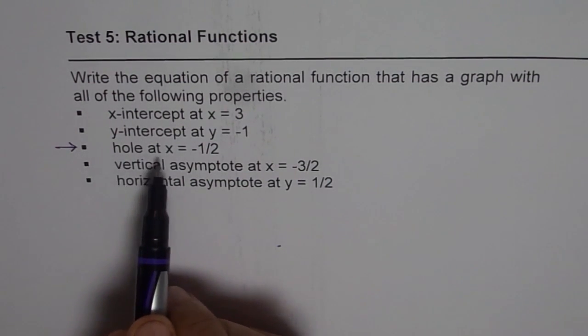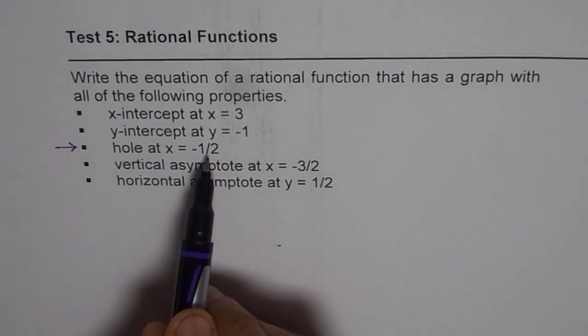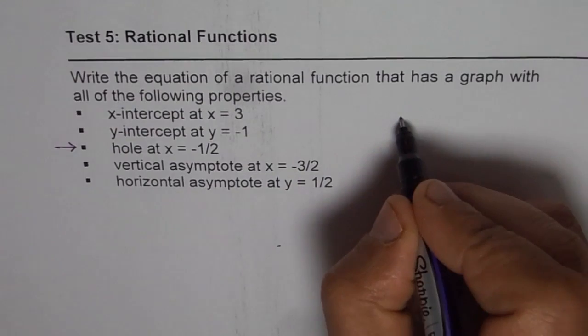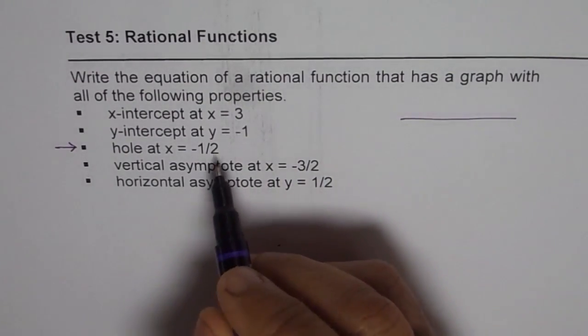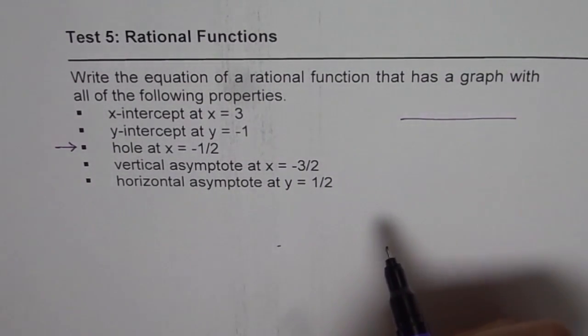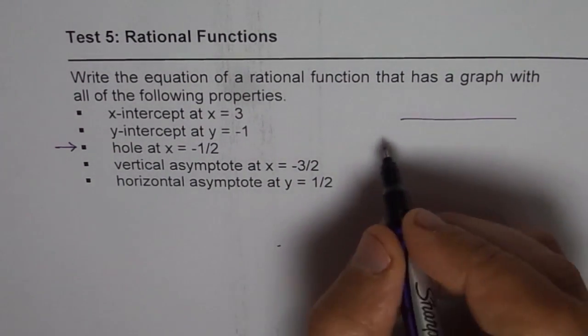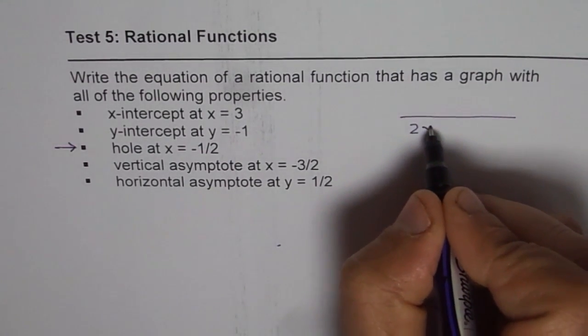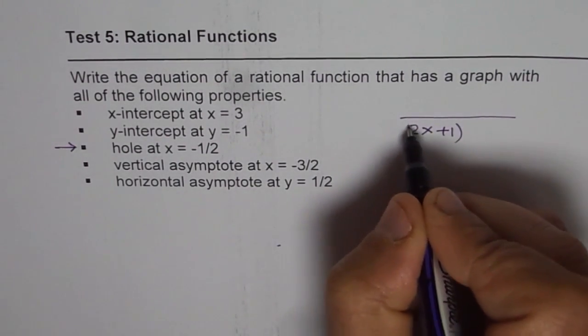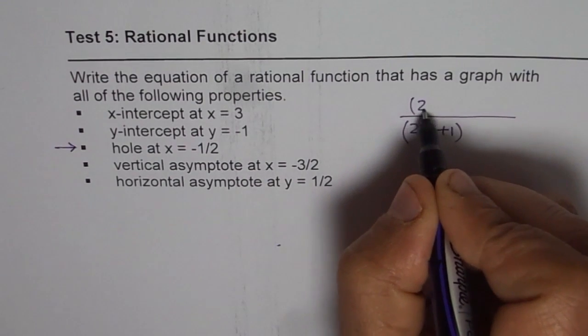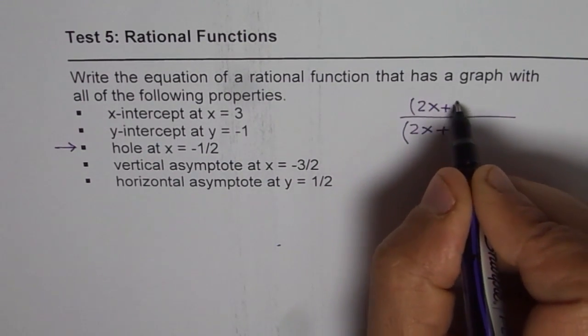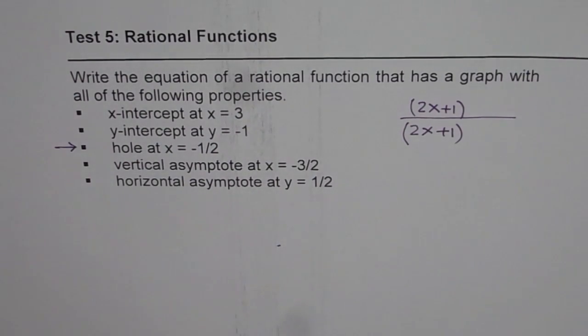Now, when we have hole at X equals to minus half, what does it mean? It really means that we have a common factor in numerator and denominator, which should be 0 for minus half. So, that factor has to be 2X plus 1. So, we have 2X plus 1 in both numerator and denominator. So, that is how you can take care of hole.